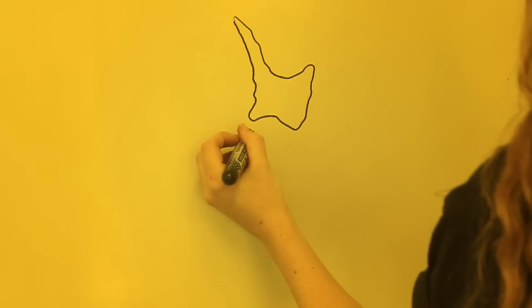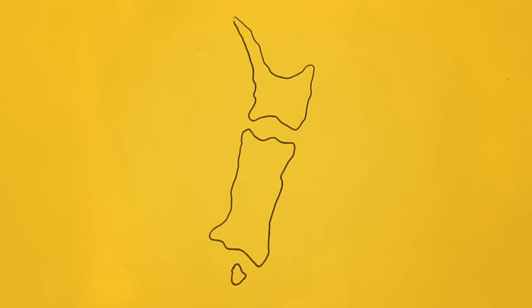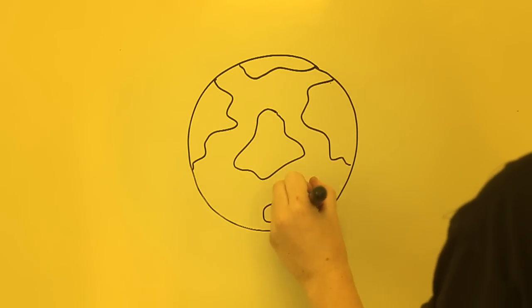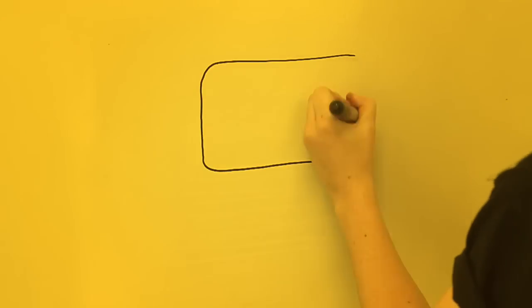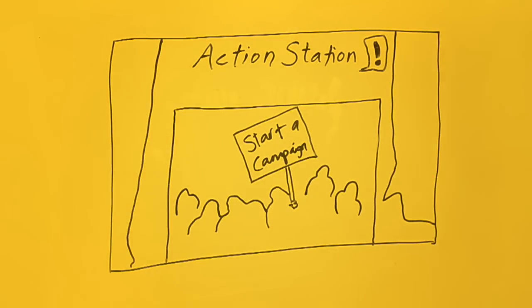Is there something you would like to campaign to change to make our country or world a fairer, more just and sustainable place? Our Action Station is an online tool that helps you start a campaign in a few easy steps.